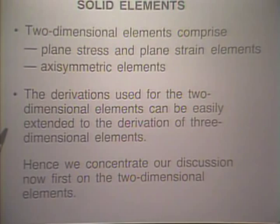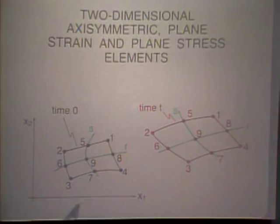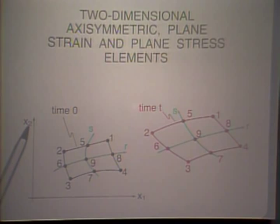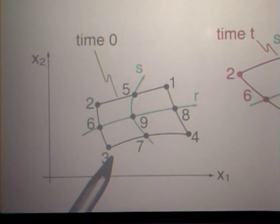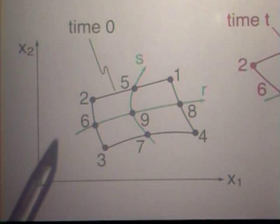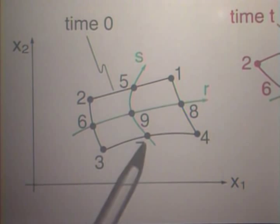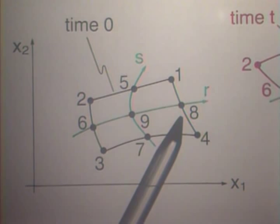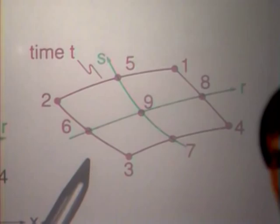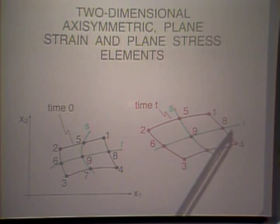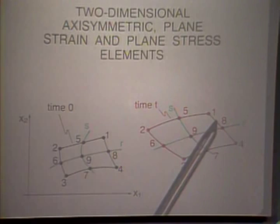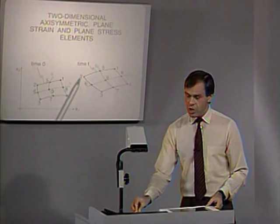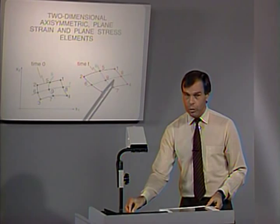Let us look at a typical two-dimensional element — a nine-node element in the stationary coordinate frame x1, x2. At time 0, we see this element with nine nodes, 1 to 9. We will be talking about isoparametric elements, which have the r and s auxiliary coordinate system — the natural coordinate system — just like in linear analysis. At time 0 the element is here, and at time t it has undergone large displacements, large rotations, and certainly also large strains. The coordinate frame x1, x2 remains stationary, as discussed in the previous lectures.